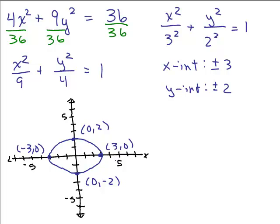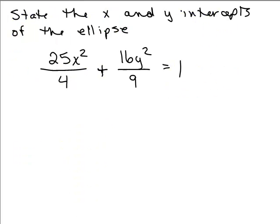Let's do one more tricky problem that is not in standard form. And again, we're going to put it in standard form. State the x and y intercepts of the ellipse. 25x squared over 4 plus 16y squared over 9 equals 1. When you first look at this, you might not realize that it's not in standard form because you see that equals 1. So that's not the problem here. The problem is you don't just have a simple x squared in the numerator of this fraction. You've got this 25 you have to deal with.